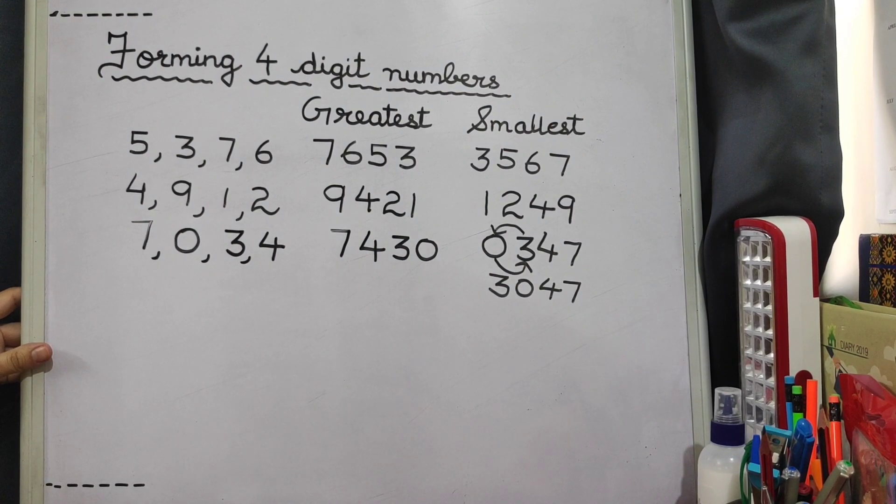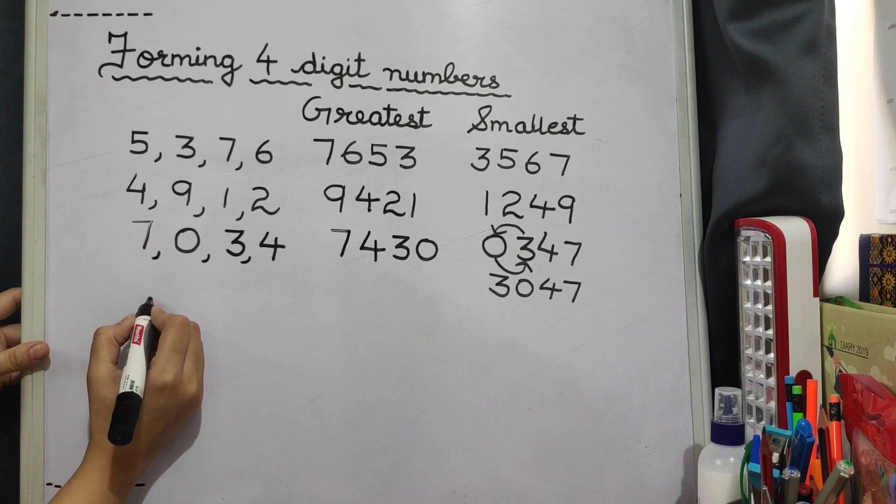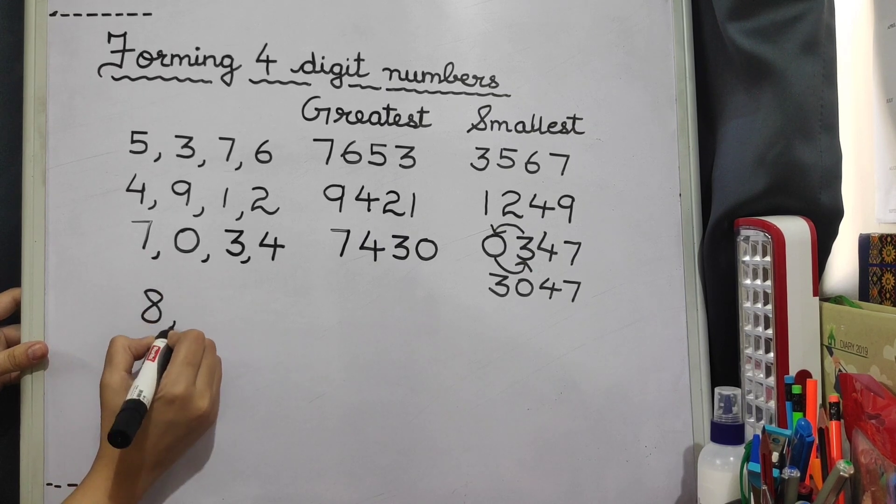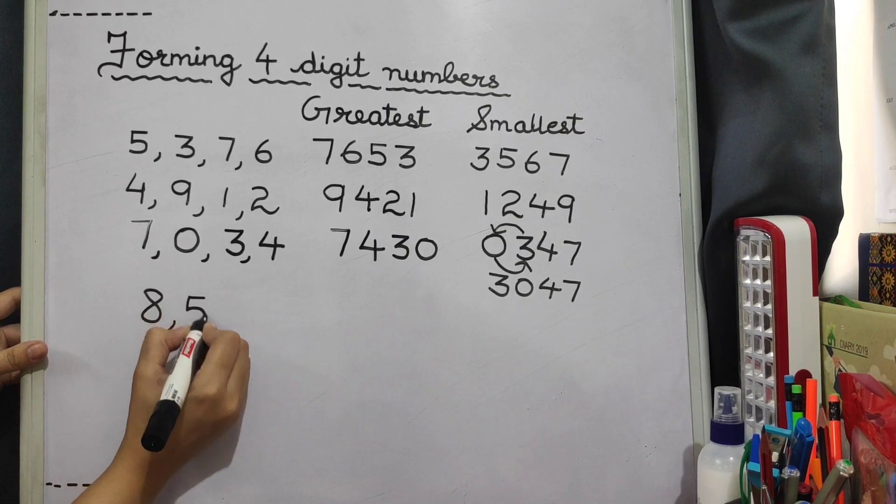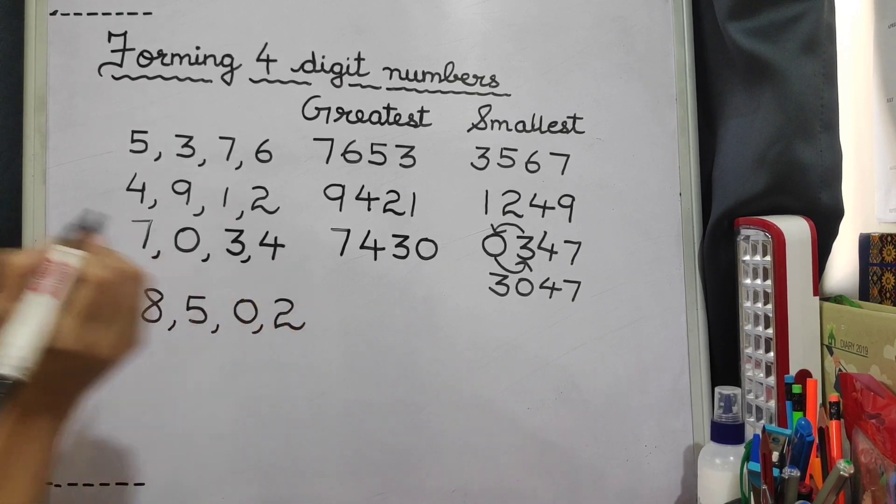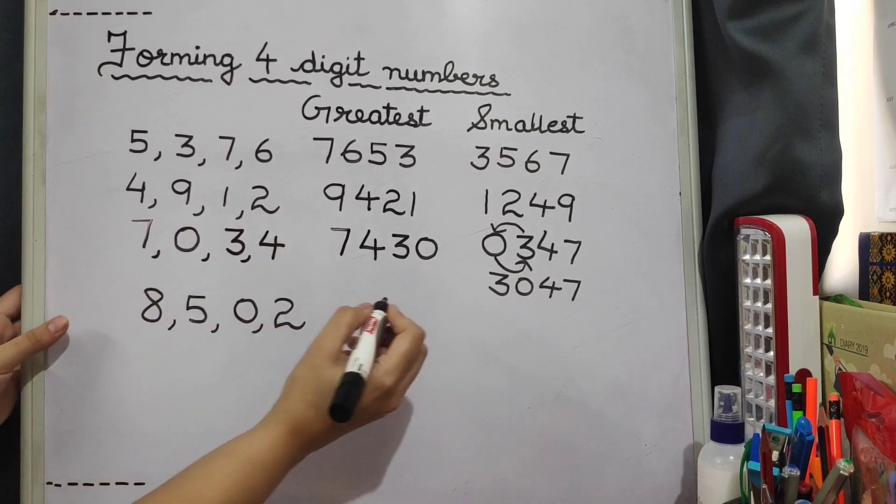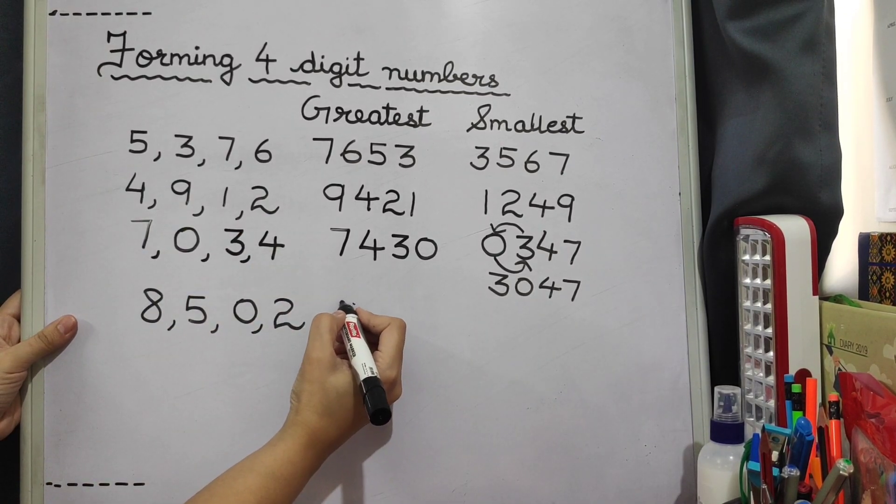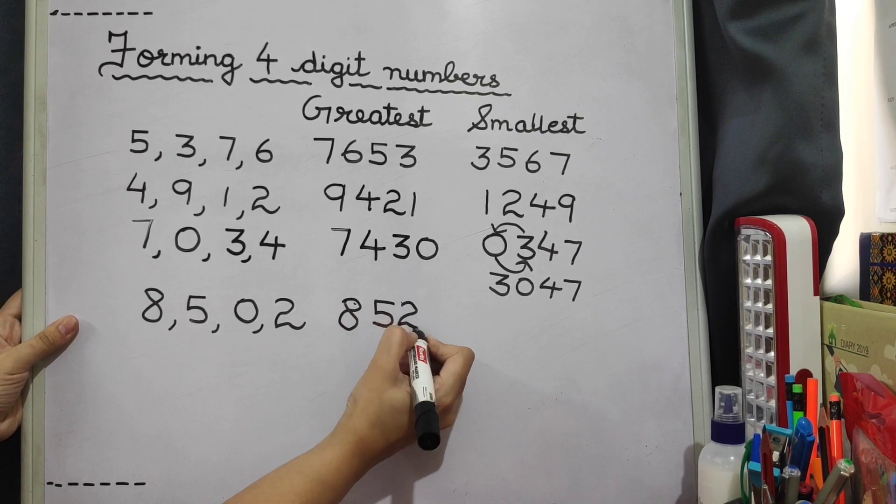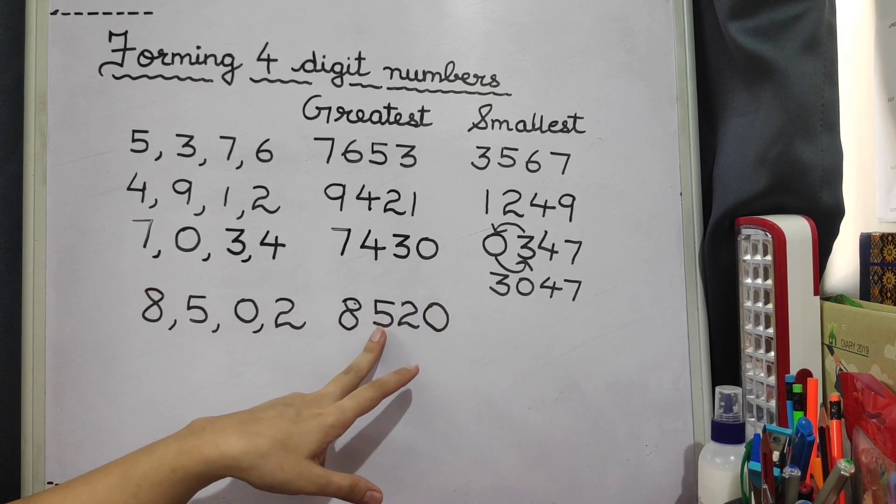Let's take one more example like this. Suppose the digits given to you are 8, 5, 0, 2. Now you know how to make the greatest number? It is 8, 5, 2, 0 which is 8520.